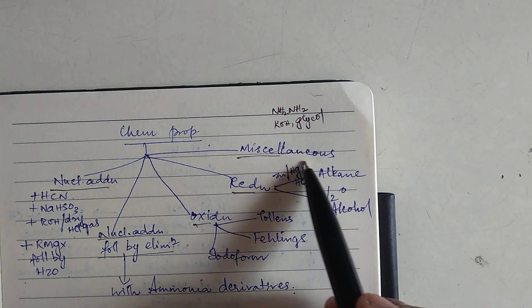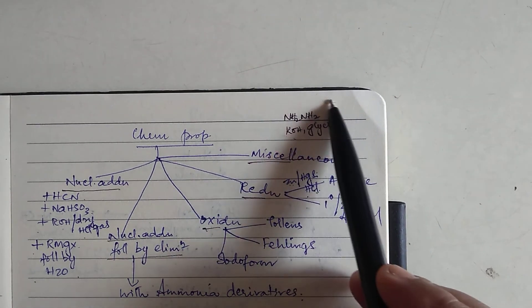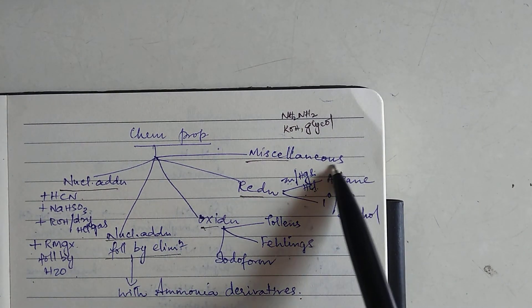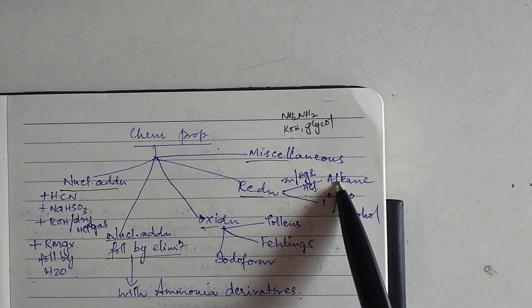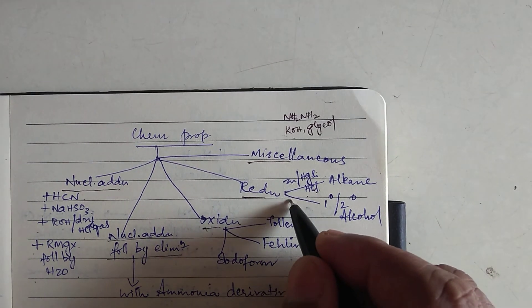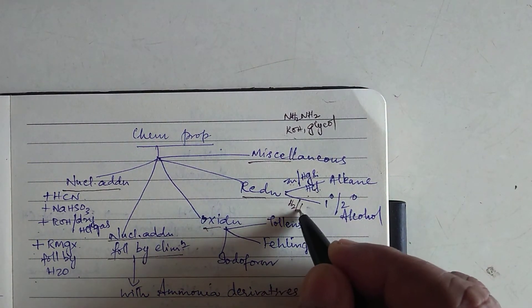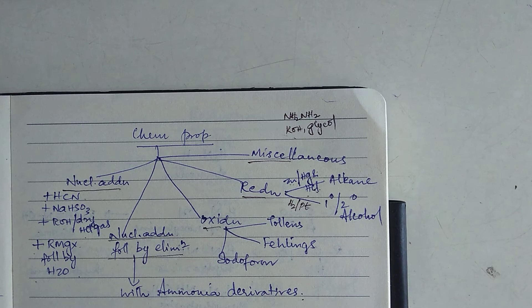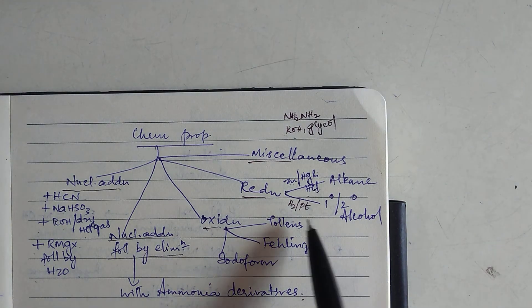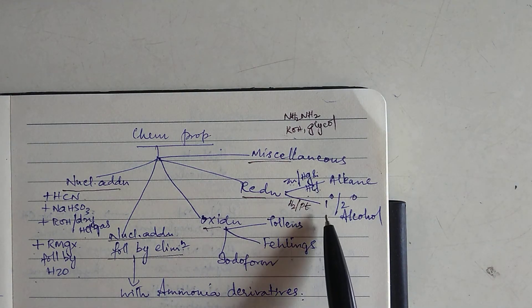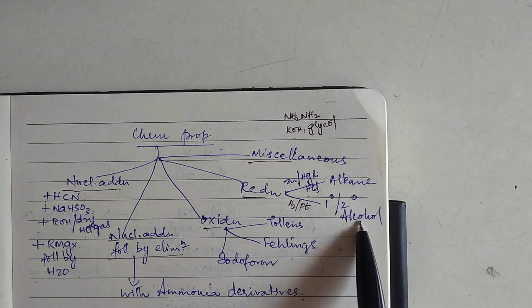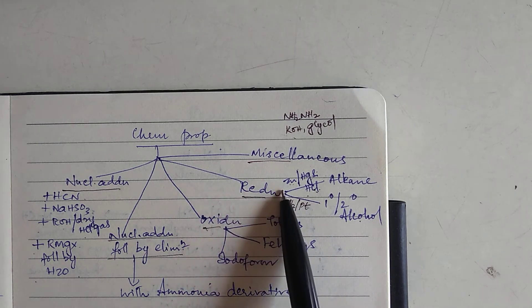Now, in both Clemensin reduction and Wolf-Kishner reduction, the product formed is alkane, whereas if it is simple hydrogenation, simple reduction, addition of hydrogen in the presence of platinum that will give rise to aldehyde will give rise to primary alcohol and a ketone will give rise to a secondary alcohol. So, this is about reduction.